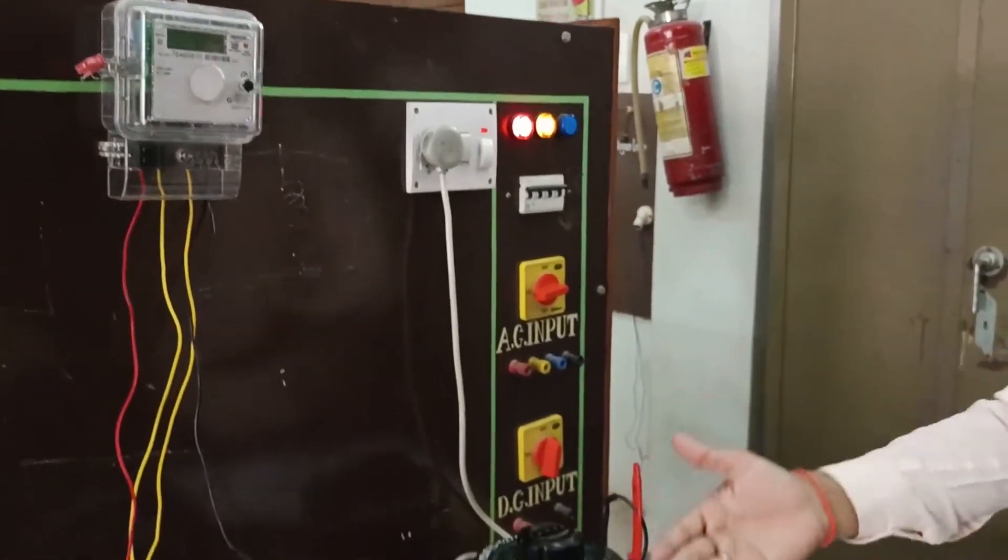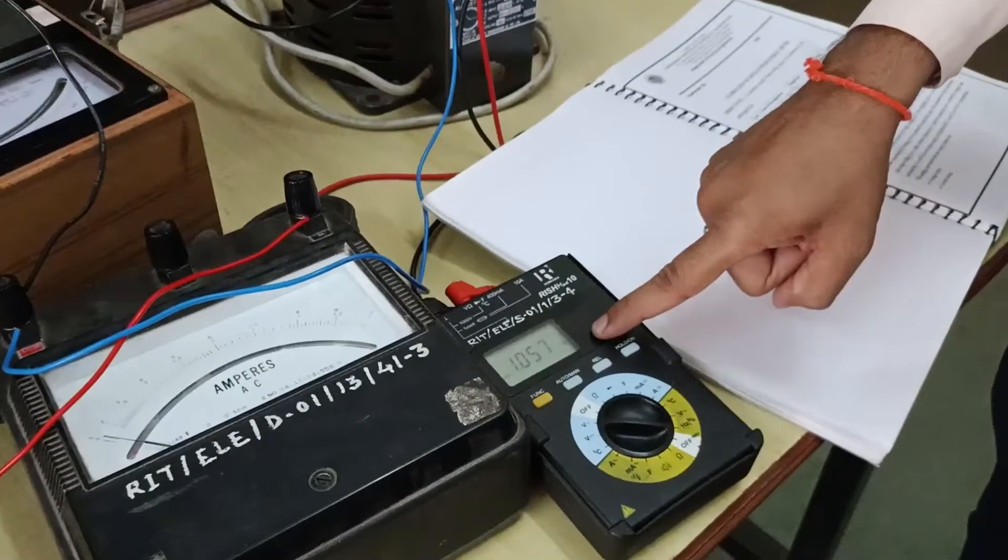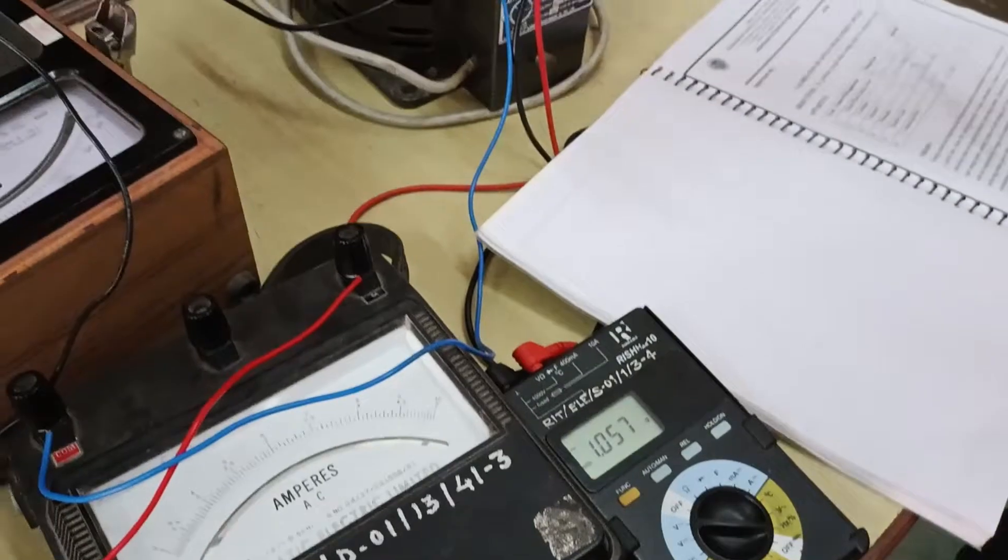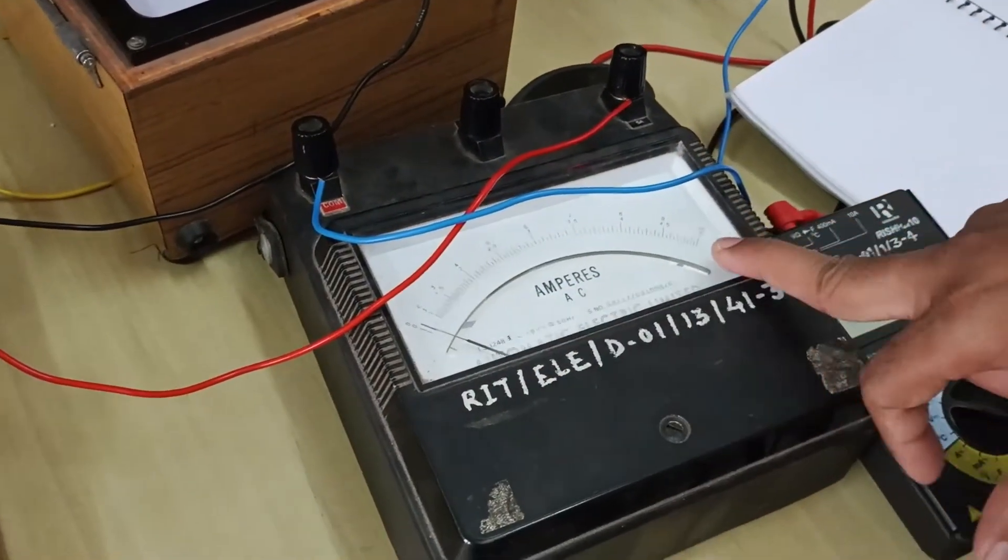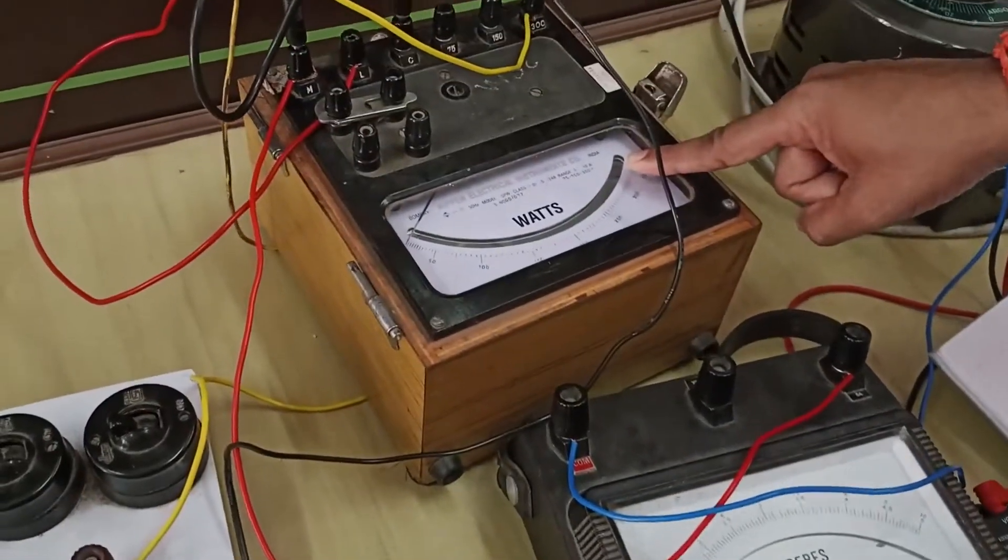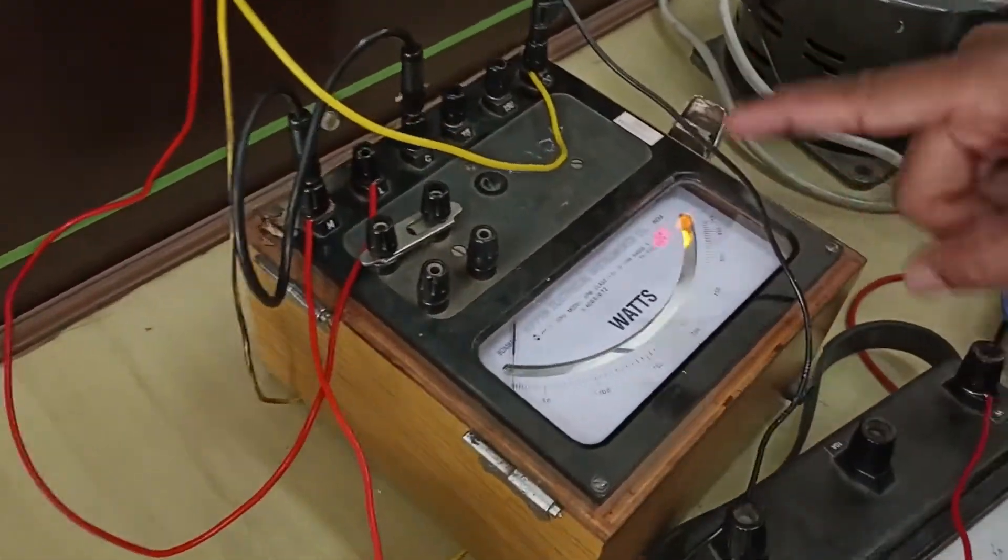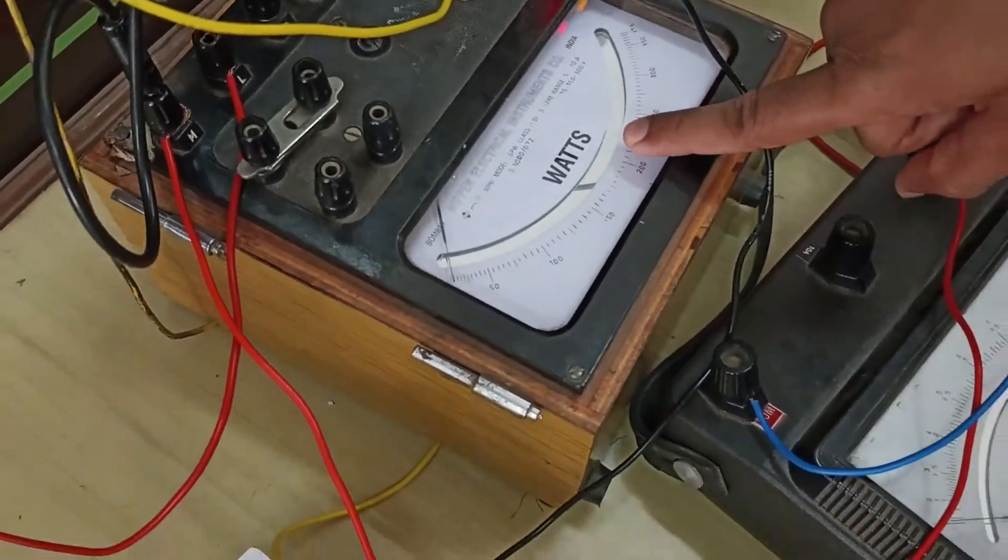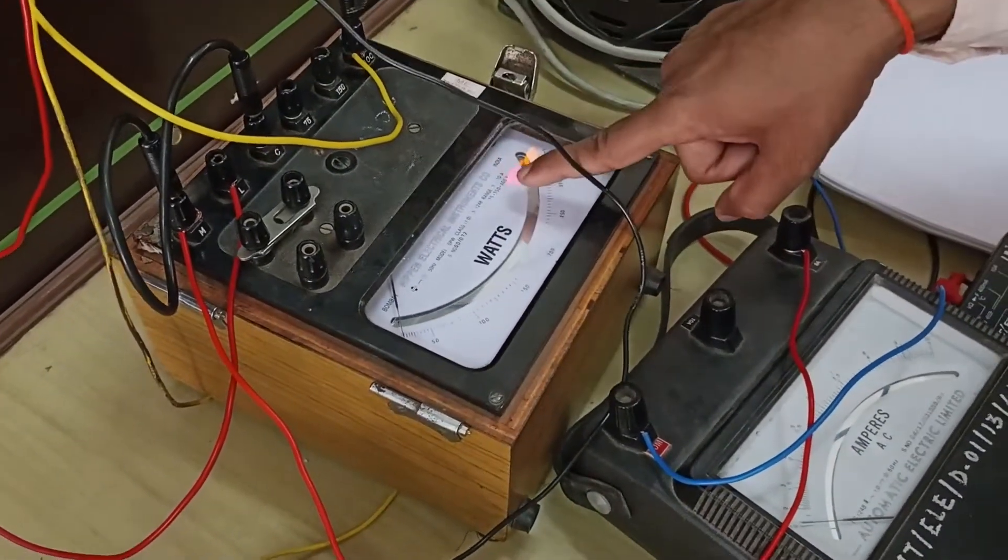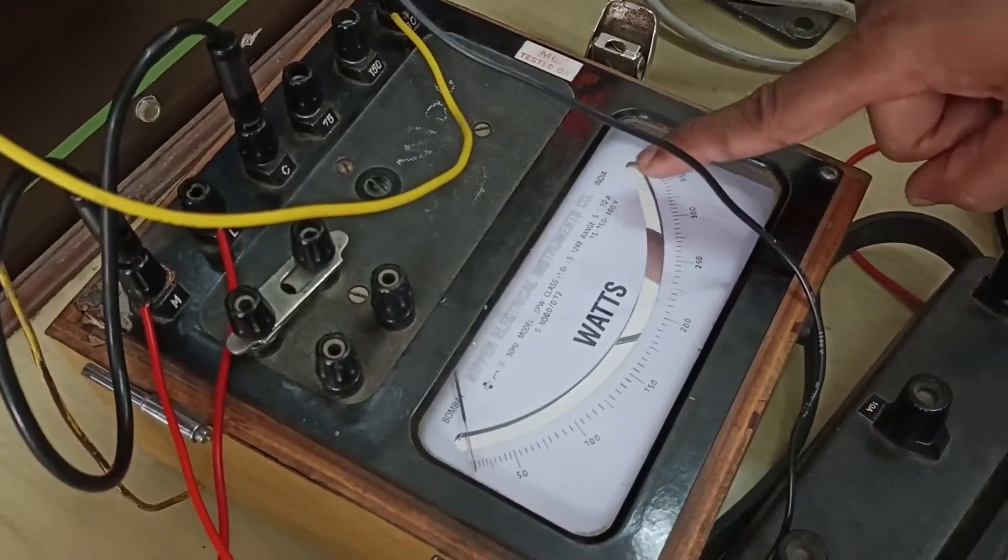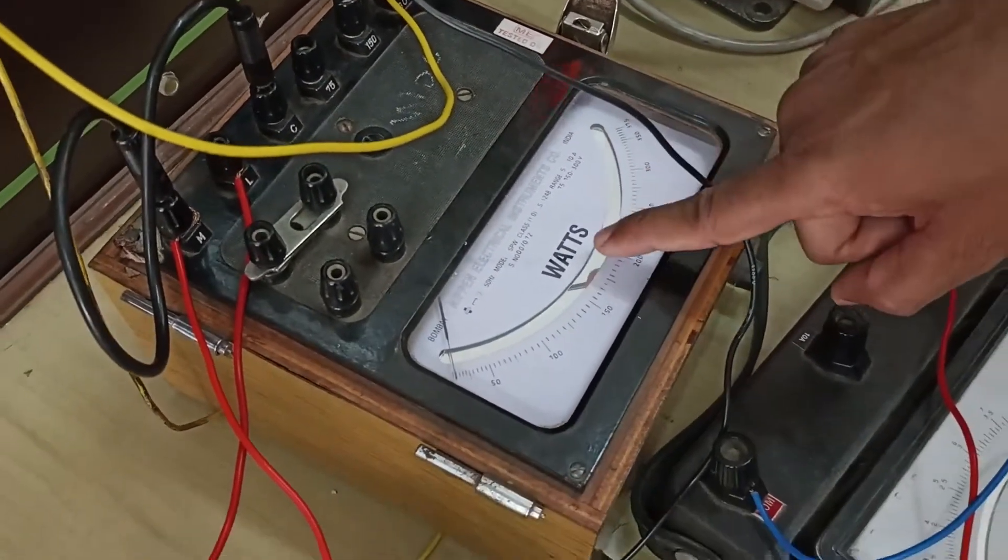Next we have our voltmeter. For voltmeter we are using digital multimeter. Then we have ammeter which is of rating 0 to 5 ampere. Next we have our wattmeter of range 0 to 375 watt and the multiplying factor we are going to use is 4.